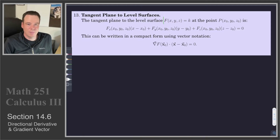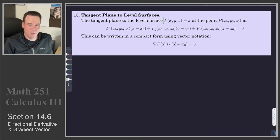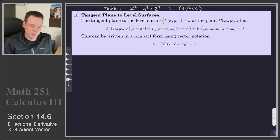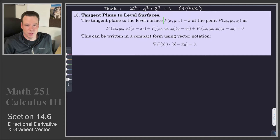Hi everyone, welcome back. In the second part of the lecture on directional derivatives and gradient vectors, we're going to look at finding the equation of a tangent plane to a surface, but we're going to do it in a way that utilizes gradient vectors. It's perfectly fine if you think of a surface like a sphere, for example, x squared plus y squared plus z squared equals 1. We're thinking of z as an implicitly defined function in terms of x and y, so we could find the tangent plane using methods from the chain rule section. We're going to see how we can find the tangent plane using ideas from this section and the gradient vector.